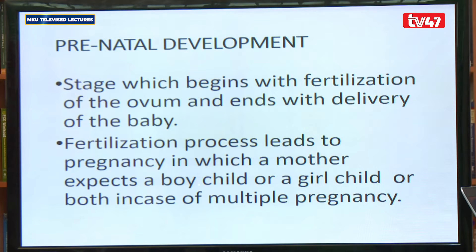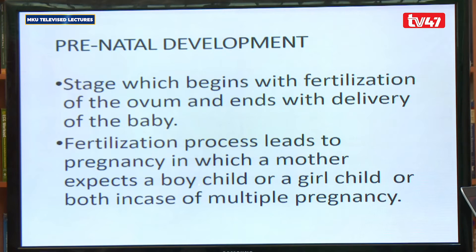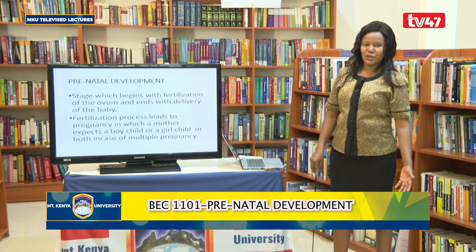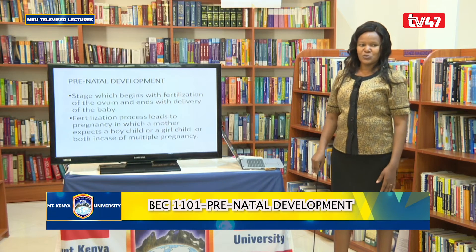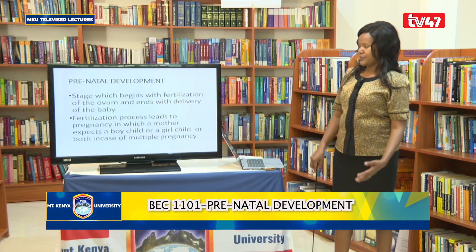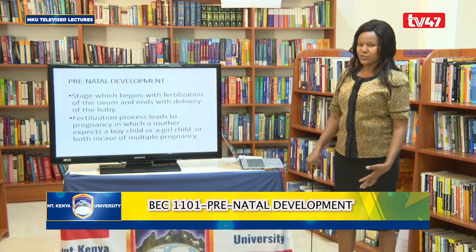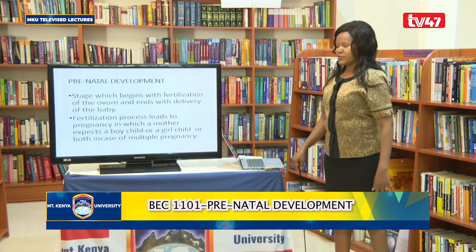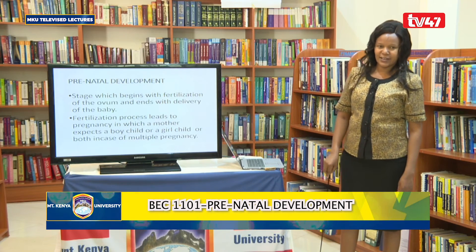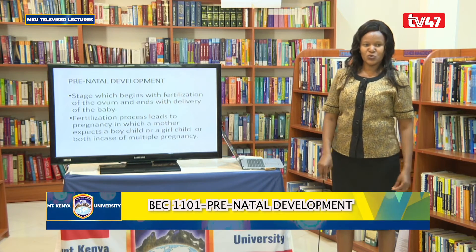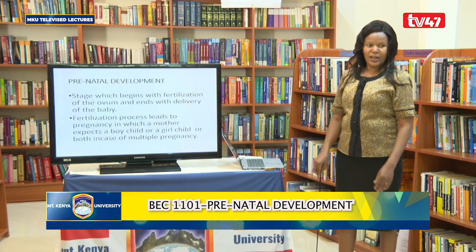Fertilization is a process by which the egg and the sperm cell fuse to form a zygote. The process of fertilization leads to pregnancy in which the mother will expect a boy child or a girl child, or even multiple births in the case of a multiple pregnancy. We should also ask ourselves: how does the scenario of multiple pregnancies arise? How does a mother come to expect two, three or even more after fertilization?